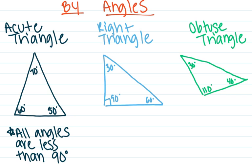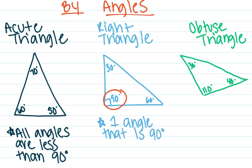A right triangle has a right angle, and we know that a right angle equals 90 degrees. So a right triangle is going to have one angle that is 90 degrees. Usually that angle is marked with a little box in the corner to show that it forms a 90 degree angle. To be a right triangle, you just have to have that 90 degree angle.